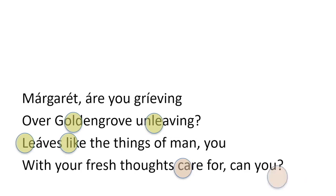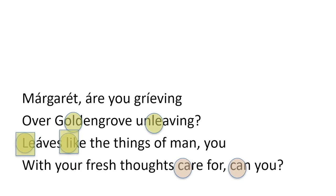There are other examples of consonance: 'the golden grove, unleaving, leaves like' — and then 'care for, can you.' We've got the L, L of 'leaves like' — another example of alliteration. And the C, C of 'care' and 'can' — again, alliteration. I'll leave you to think about how those might be contributing to the effects of those opening lines.